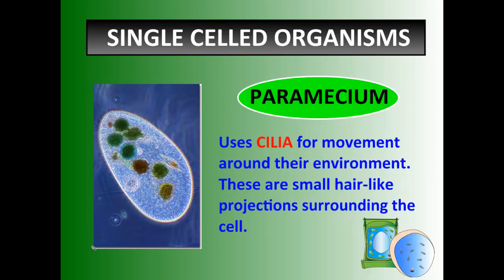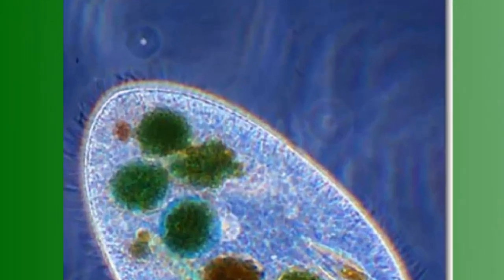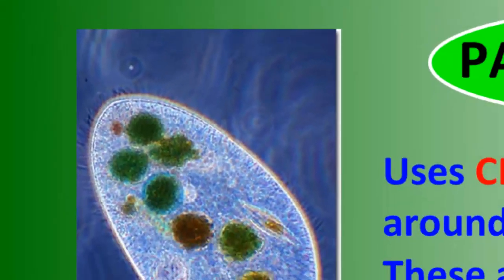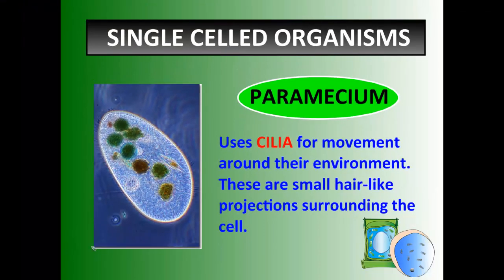This other critter, a paramecium, uses tiny little hairs. You can just barely make them out in the top left part of the picture. They're tiny hairs called cilia, and these cilia are actually controlled by the paramecium, which doesn't have a brain. Each hair beats to allow it to move through the water — they're usually found in ponds. These little cilia just beat like crazy in little wave-like projections, allowing the paramecium to move through the entire environment. So those are just two different ways that single-celled organisms can move around.